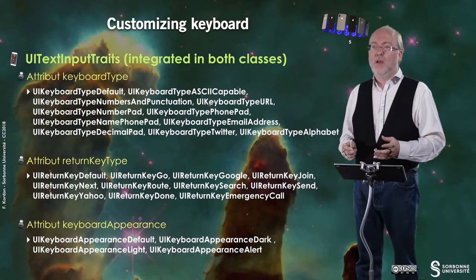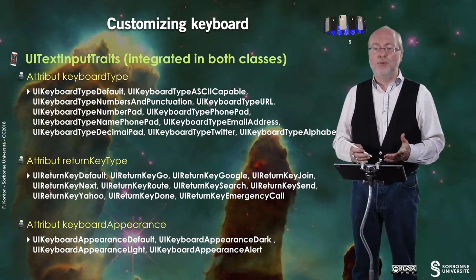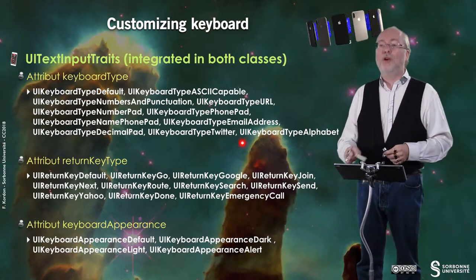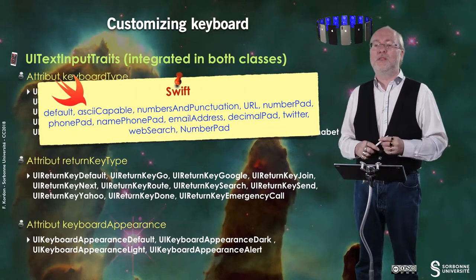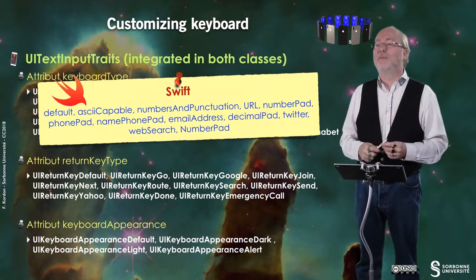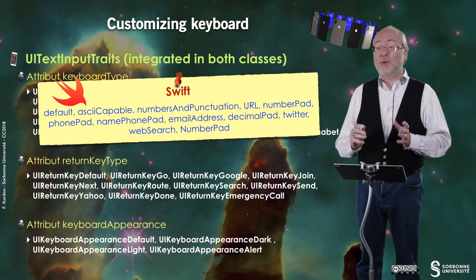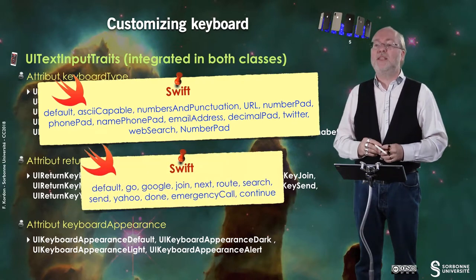Keyboard customization is handled thanks to a protocol, UITextInputTraits, which is integrated in both classes. First of all, you have keyboard type attributes — these are all the possible values you can have in Objective-C. Of course in Swift it's better because you have shorter names. You have an attribute that sets up the return key type appearance, and you have these values.